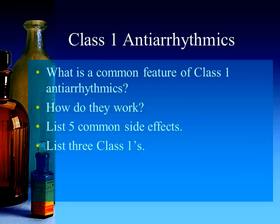First we're going to take a look at class 1 antiarrhythmics. The category of class 1 antiarrhythmics have a very common feature — all of them are also known as local anesthetics. So every one of these medications, when given topically, provides anesthesia to the area. The common feature of all class 1 antiarrhythmics is that they are also local anesthetics.